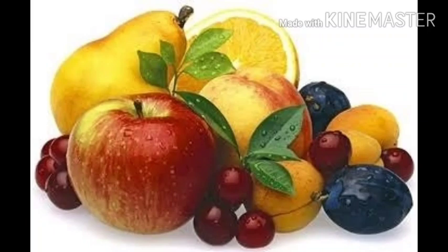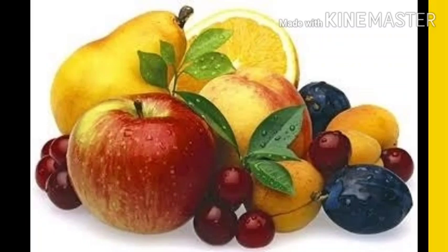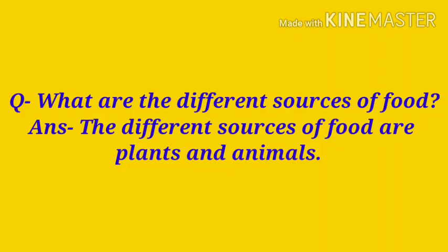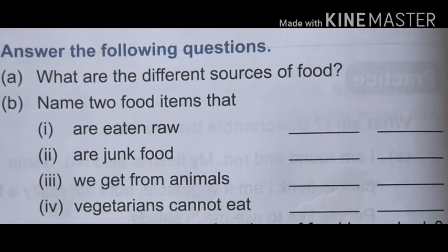Now let's revise the exercise of this chapter. What are the different sources of food? भोजन के विभिन्न स्रोत क्या हैं? The different sources of food are plants and animals — भोजन के विभिन्न स्रोत हैं पौधे और जानवर. Next: name any two food items that are eaten raw — जिन्हें हम कच्चा खाते हैं. Raw का मतलब होता है कच्चा.